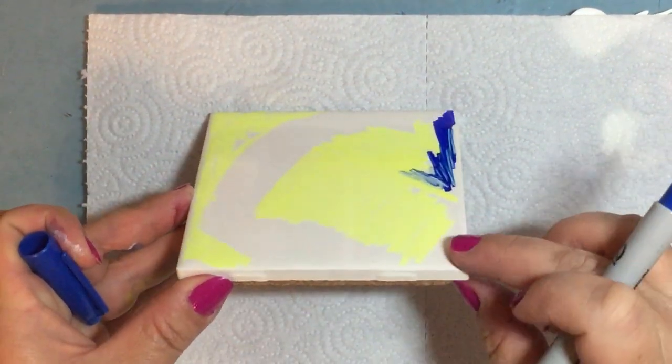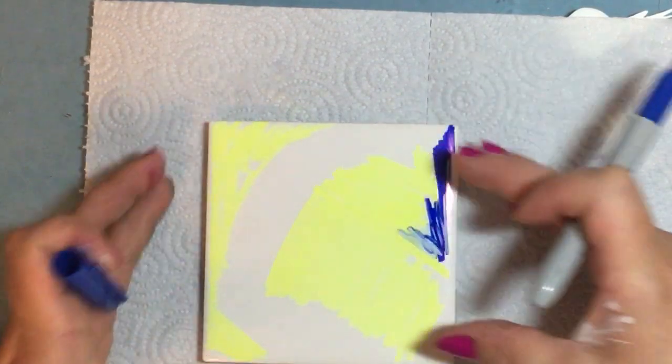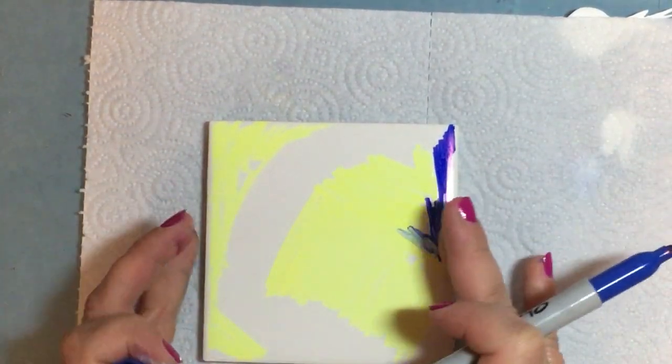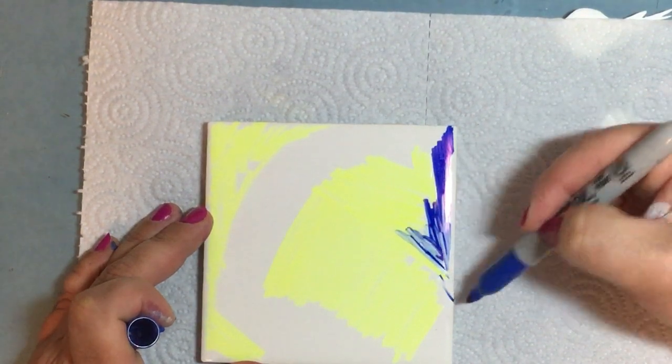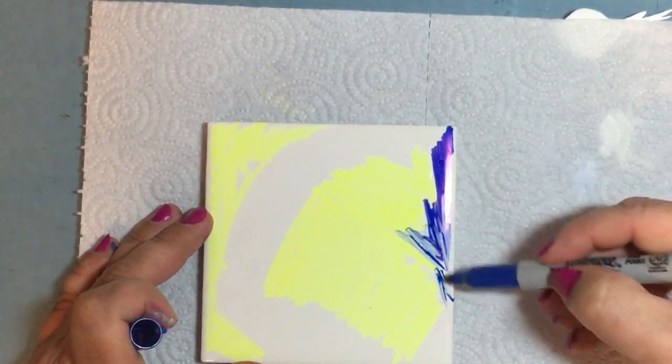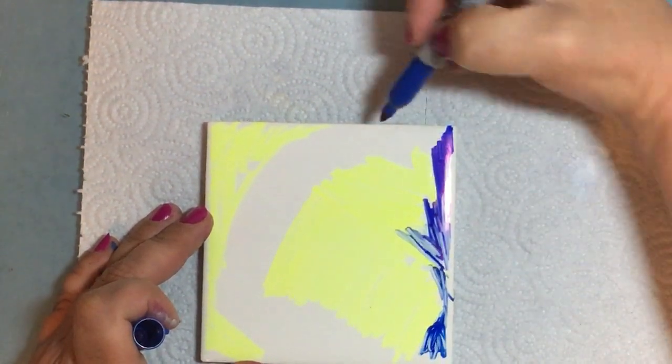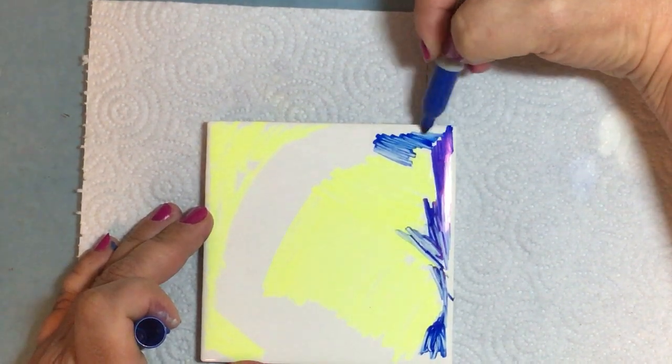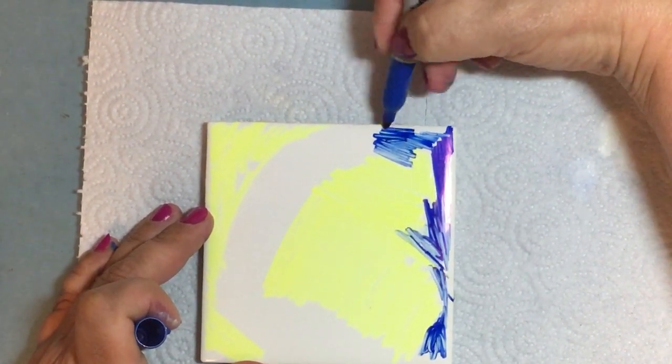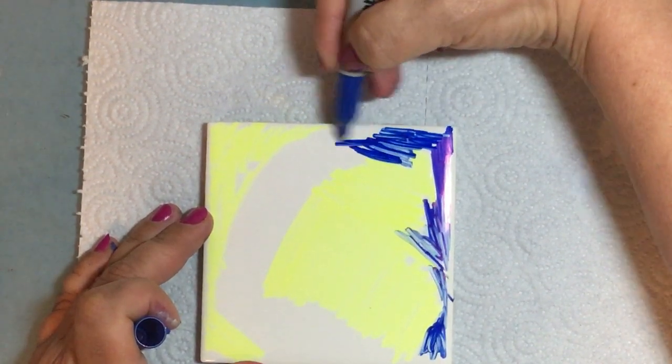I'm coloring in these empty spaces here. I'm not going to go all the way to the edge. This tile has a beveled edge that goes down, and because it slants down slightly, the ink will roll onto the edges anyway, so I'm not worried about coloring all the way to the edge.